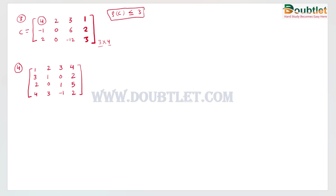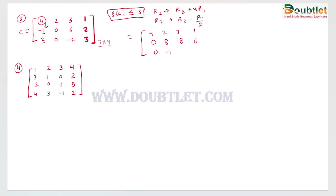To find the row echelon form, the pivot element in row one is identified. We need to make the elements below it zero by applying: R2 plus four R1, and R3 minus R1 divided by two. After applying these operations, we get the updated matrix. Then for the second pivot in row two, we apply R3 plus eight R2 to eliminate the remaining non-zero element below.